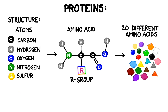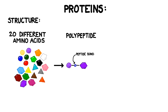The 20 different varieties serve as the building blocks for proteins. A series of amino acids is strung together using connections called peptide bonds. Every time we attach a new amino acid to the end of the chain we remove one molecule of water in a process called dehydration synthesis. When we've created a long string of amino acids all connected in this way we call it a polypeptide.